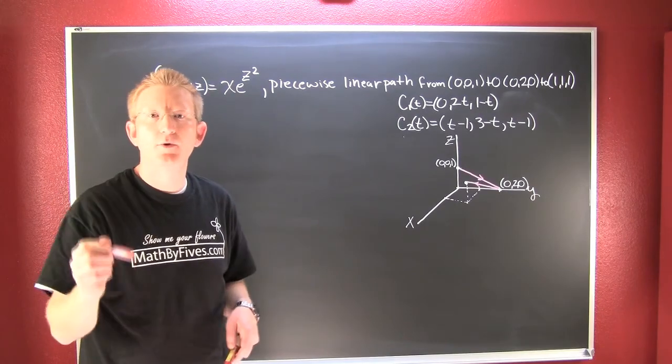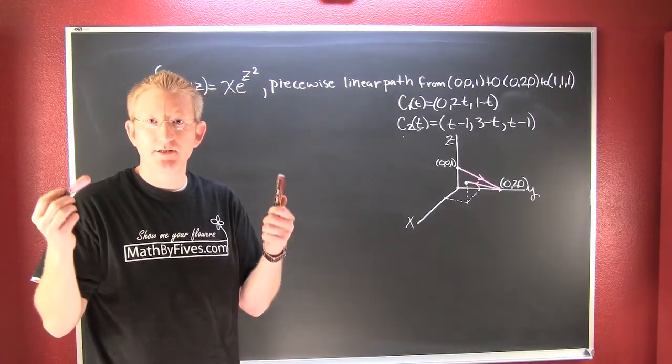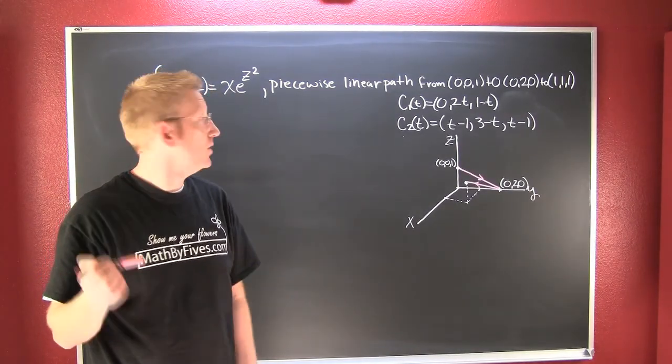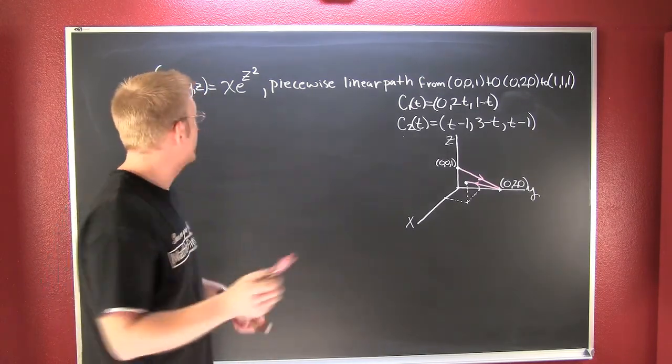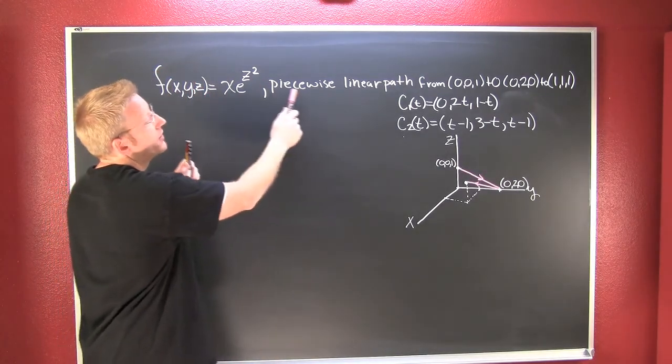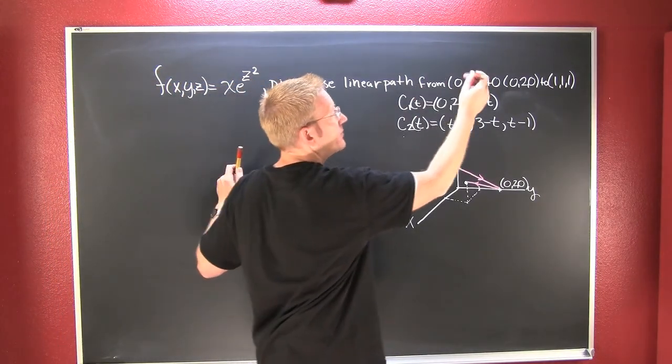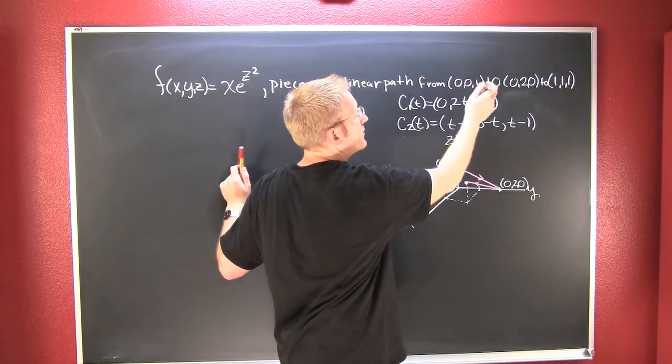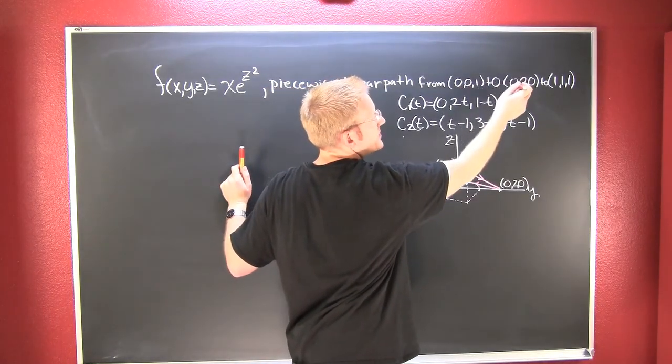All right, so in our second example of these scalar line integrals, what we want to do is integrate this function along the piecewise linear path from the point (0,0,1) to the point (0,2,0).